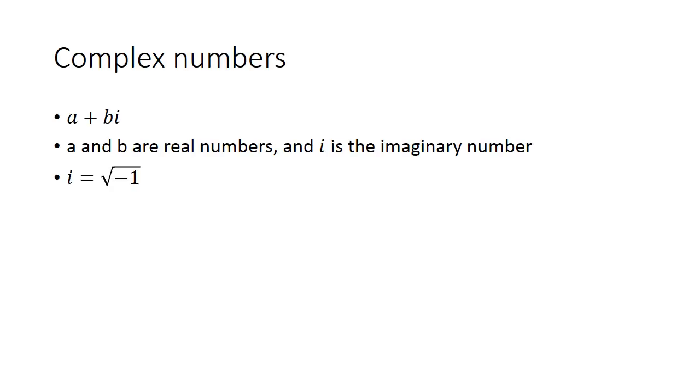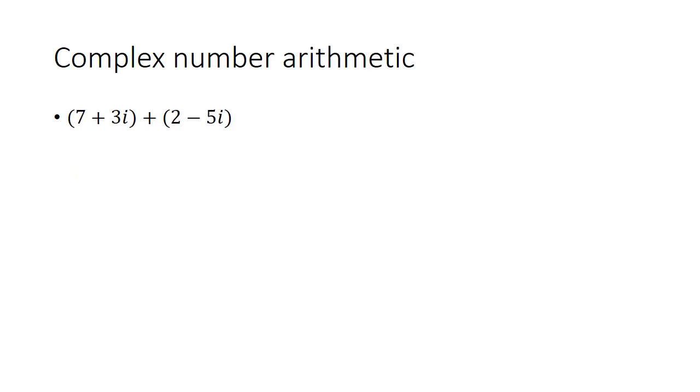Now, let's talk about i, which is the square root of negative 1. All complex numbers are numbers that can be written in the form of a plus bi, where a and b are real and i is the imaginary number, which we set equal to the square root of negative 1. I'd like you to be able to add these. If you can add them, all you have to do is combine the two real terms, the 7 and the 2, and the two imaginary terms, the 3i and the negative 5i. If you put those together, you get 9 minus 2i.